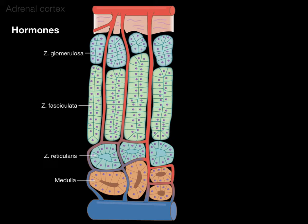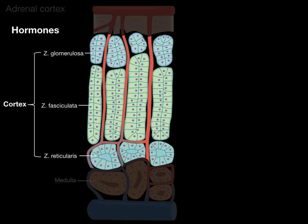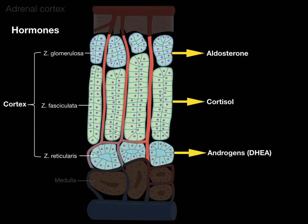Now let's talk about the hormones secreted by the adrenal cortex. The zona glomerulosa secretes aldosterone, the fasciculata secretes primarily cortisol, and the reticularis secretes primarily androgens. Aldosterone is a mineralocorticoid, so it deals with salt. Cortisol is a glucocorticoid, so it deals with sugar. And androgens deal with sex hormones. So salt, sugar, sex is one way to remember these three hormones.